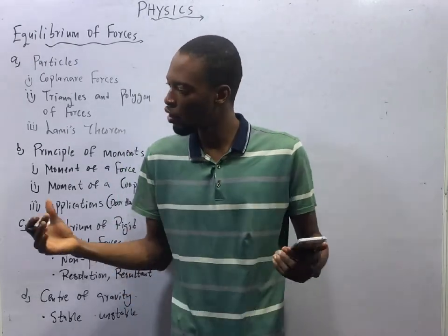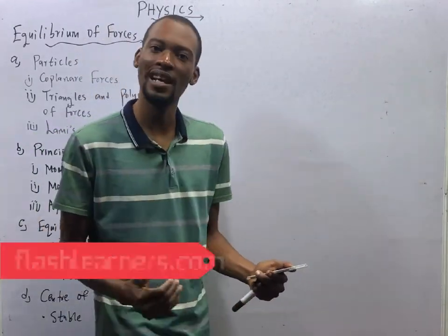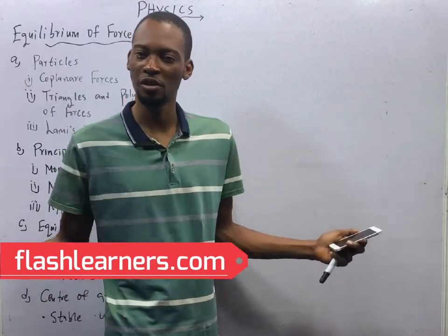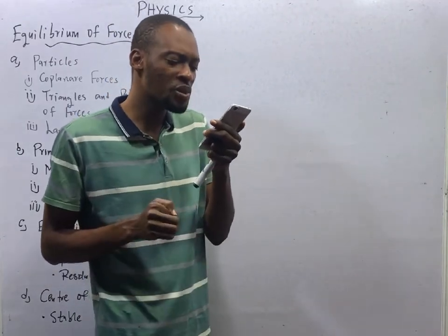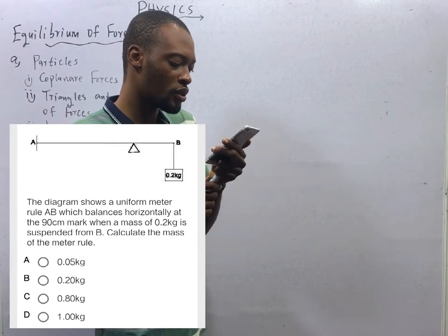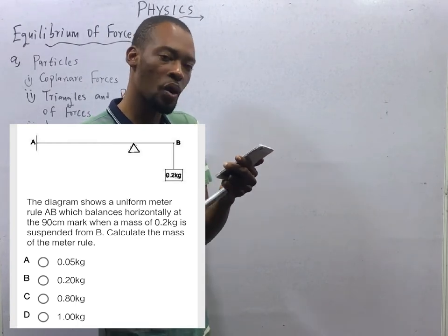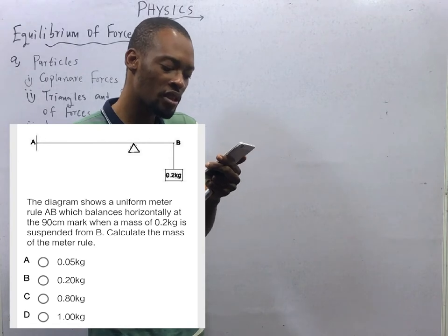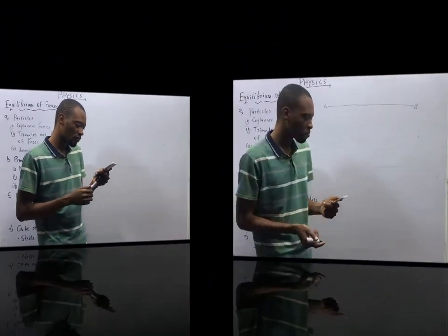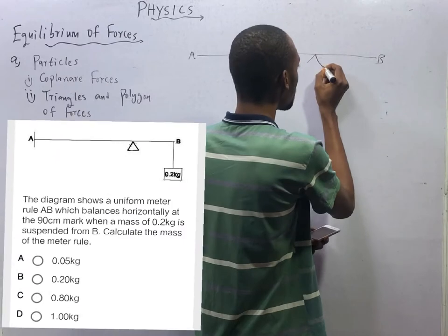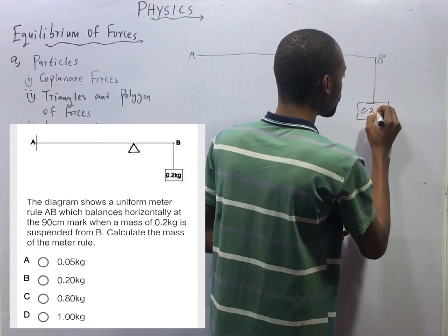The first question, gotten from the Flash Learners JAM application — you can get one for yourself when you visit flashlearners.com. The diagram shows a uniform meter rule which balances horizontally at the 90 cm mark when a mass of 0.2 kg is suspended from B. We have a mass suspended at the end, and this mass is 0.2 kg. Calculate the mass of the meter rule.